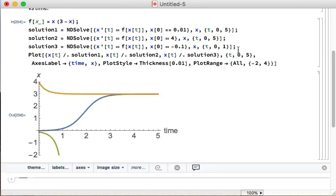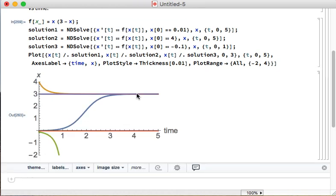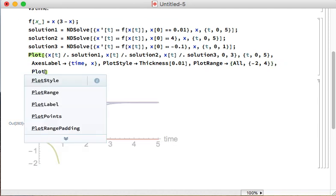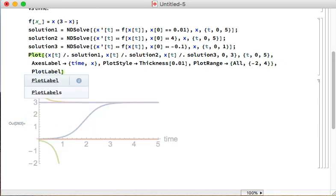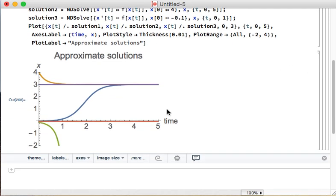And I'd also like to add the two equilibrium solutions, the fixed points, where if we start at them, we stay at them. I don't actually need to integrate to find those. I know that if I start at 0, I should stay at it for all time. If I start at 3, I stay at it for all time. So let me put a title on this. Plot Label Approximate Solutions. Awesome.